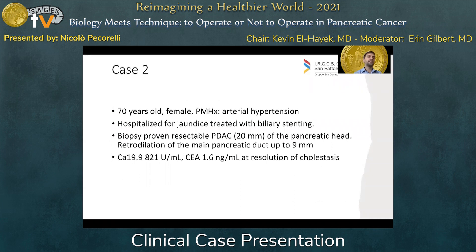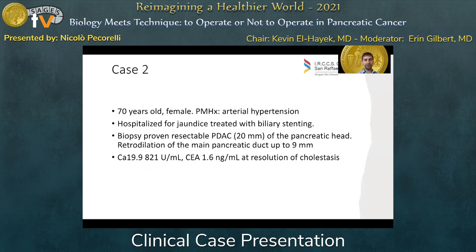The second case is a 70-year-old female with a past medical history of high blood pressure. She was hospitalized for jaundice, treated with EUS and biliary stenting, and underwent a biopsy that found a pancreatic cancer of the pancreatic head. We have a resectable pancreatic cancer with retrodilation of the main pancreatic duct up to nine millimeters. CA 19-9 is elevated at 821, but CEA is normal. These were obtained after biliary stasis was resolved.